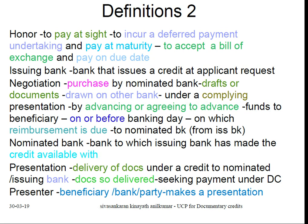Negotiation is the purchase or prepayment by the nominated bank of drafts or documents drawn on another bank under a complying presentation, by advancing or agreeing to advance funds to the beneficiary on or before the banking day on which reimbursement is due to the nominated bank from the issuing bank. Issuing bank is a bank that issues a credit at the request of the applicant. Nominated bank is a bank with which the issuing bank has made the credit available. Presentation is a delivery of documents to the nominated bank, issuing bank, or confirming bank by the beneficiary. Presenter is a beneficiary, bank, or party who makes a presentation.